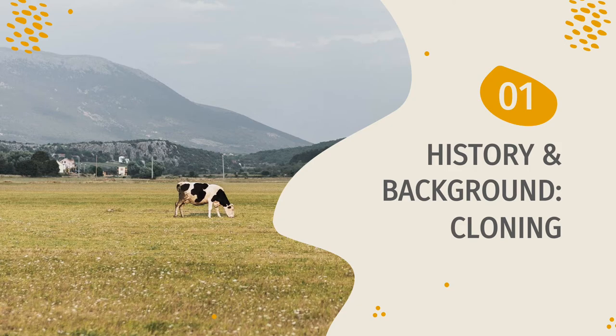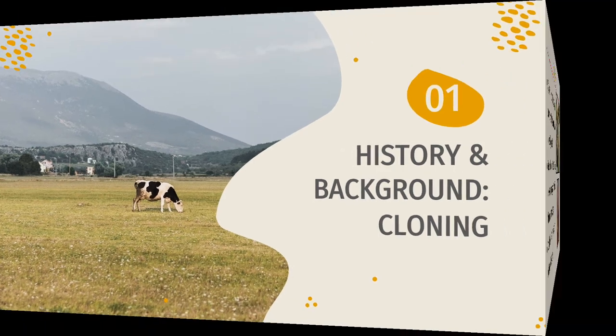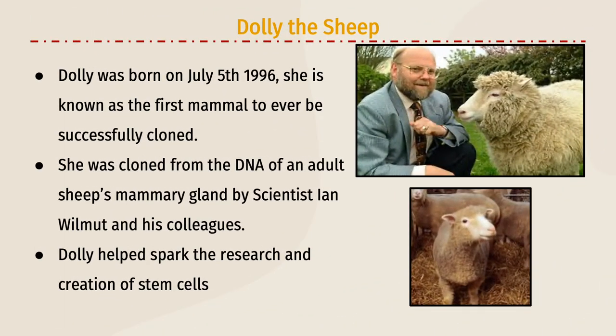First we're going to talk about the history and background of cloning. The first successful cloned mammal was a sheep by the name of Dolly. She was created by a scientist by the name of Ian Wilmut, along with some of his fellow colleagues in Edinburgh, Scotland in 1996. She was produced from the mammary gland of an adult sheep and helped pave the way to what we now know of cloning today.